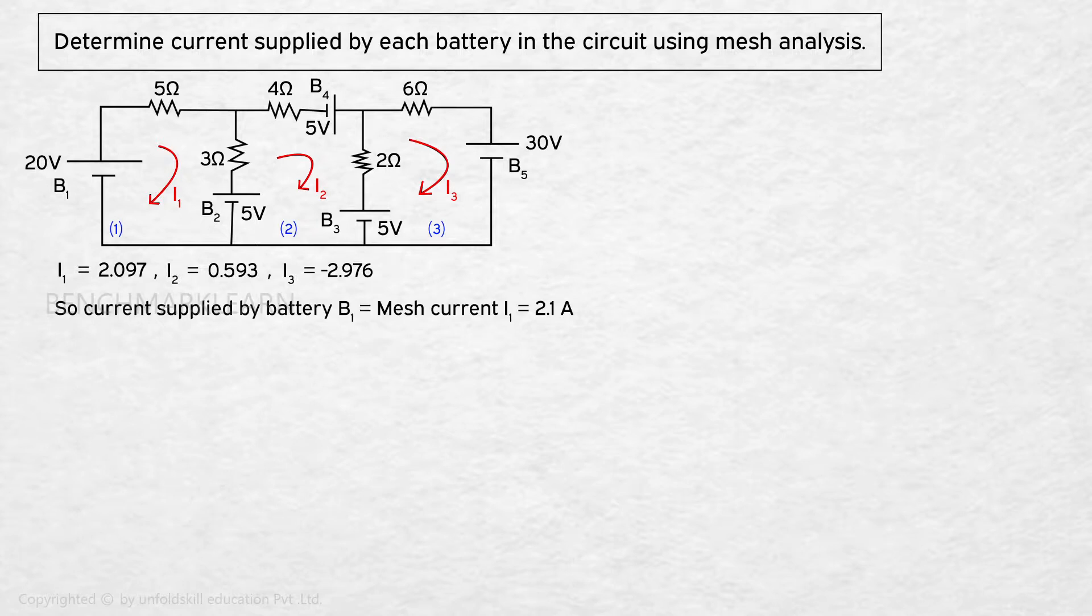Current supplied by battery B1 equal to mesh current I1 which is equal to 2.1 ampere.